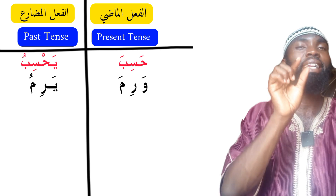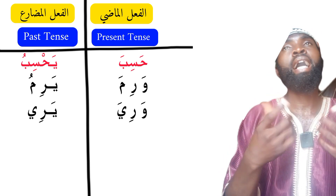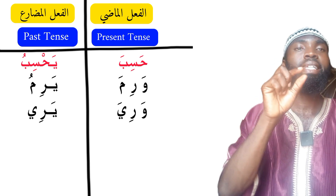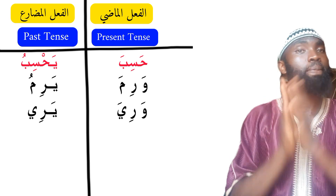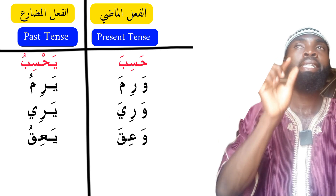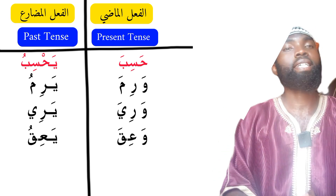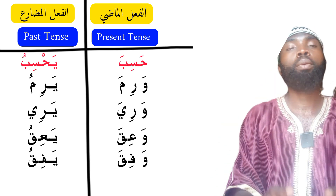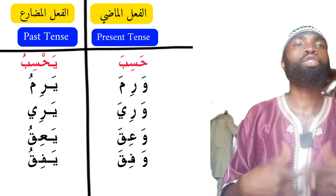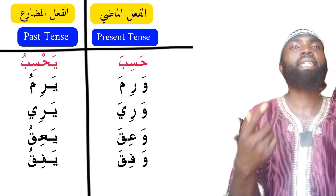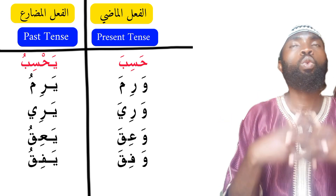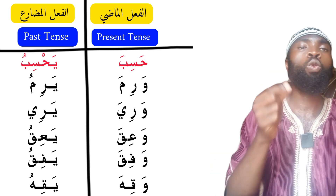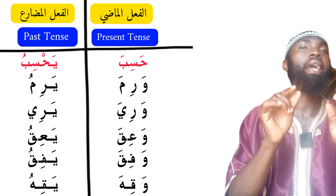Another example is wariya-yariya, meaning for something to become dense or concentrated. Then warika-yariqu is another example under this pattern, meaning for something to be befitting or suitable — for example, wafaqa al-amr, meaning he accepted the matter and found it suitable. Another example is wakiha-yakihu, meaning he obeyed — as in wakiha lahu, he obeyed him.